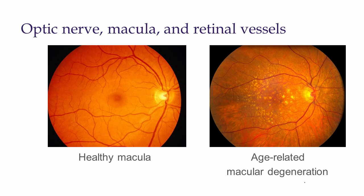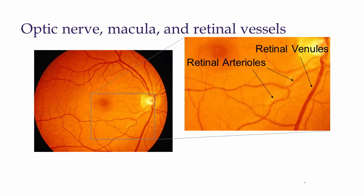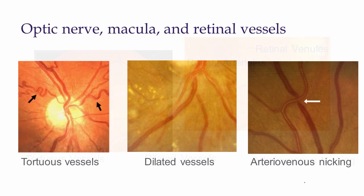The macula should be flat and without any pigmentary changes or deposits. The most common cause of macular disease in people over the age of 65 years is age-related macular degeneration. Normal retinal vessels have an arterial to venous ratio of 2 to 3. Observe the shape, contour, color, and caliber of the vessels. Abnormalities such as tortuous vessels, narrowing or dilation of the vessels, or arteriolar nicking may suggest changes due to chronic diseases including hypertension, diabetes, and obstructive sleep apnea.